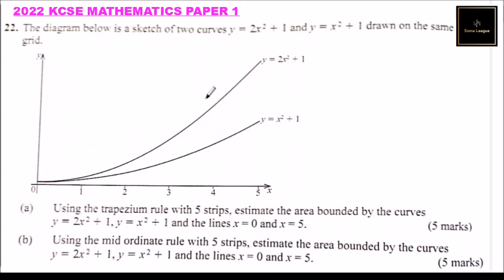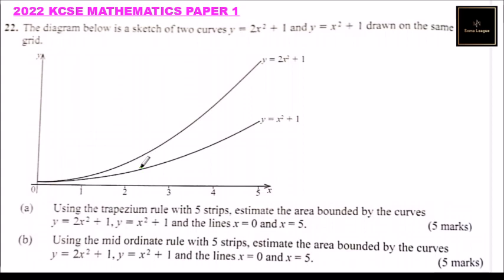We have our grid here with two curves: y equals 2x squared plus 1 and y equals x squared plus 1, with the x-axis and y-axis. Part A: using the trapezium rule with five strips, estimate the area bounded by the two curves and the lines x equals 0 and x equals 5.